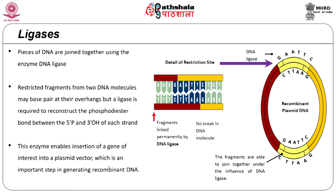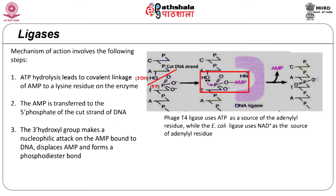Ligases bind to double-stranded DNA and join the cut ends of each single strand by forming a phosphodiester bond between the 5 prime phosphate of one nucleotide and the 3 prime hydroxyl group of the second nucleotide. The enzyme first binds to the two strands of DNA at the site of the cut, then hydrolyzes ATP to form an AMP adduct at the 5 prime phosphate end of the cut DNA molecule. Finally, the free OH group at the end of the other strand makes a nucleophilic attack on the AMP and replaces it to seal the DNA by reformation of the phosphodiester bond. There are two classes of DNA ligases differing in cofactor: T4 ligase uses ATP while E. coli ligase uses NAD+ as the donor of the adenylyl group.